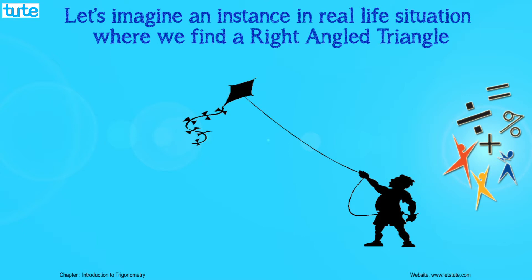Let us consider the string of the kite as one side of the triangle, the perpendicular height of the kite from the ground as another side of the triangle, and the horizontal ground as another side of the triangle. So what do we have over here? A right-angled triangle. With a right-angled triangle and with knowledge of trigonometry, finding heights, speed, or distance becomes an easy job.